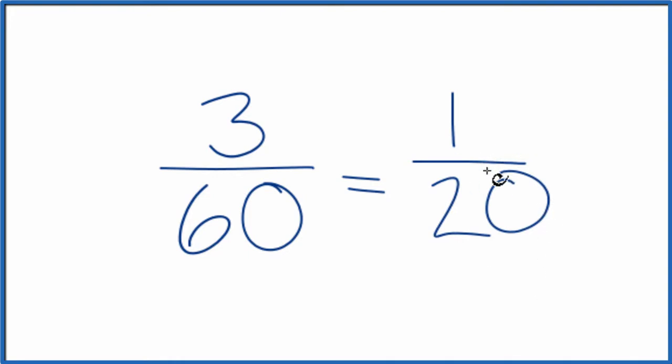We can't simplify this any further. So the fraction 3 over 60 equals 1 over 20. If you divide 3 by 60 or 1 by 20, you get the same value. That's because they're equivalent fractions. We just simplified or reduced 3/60 down to 1/20.